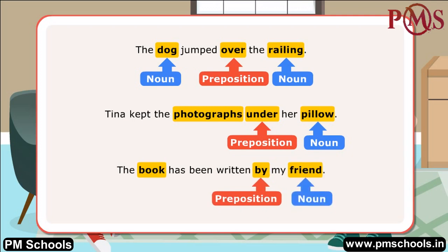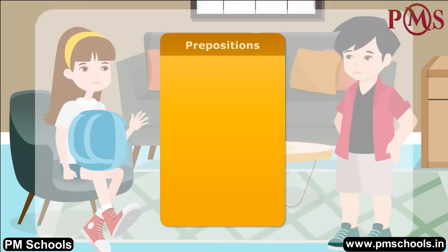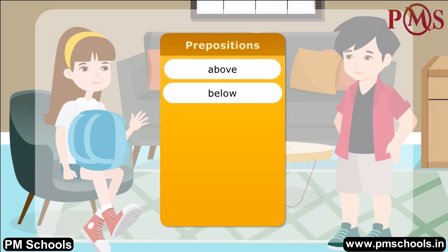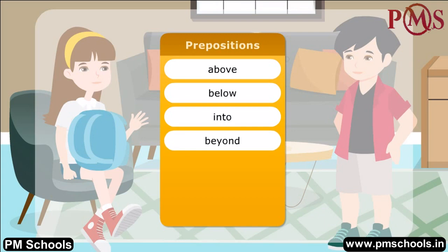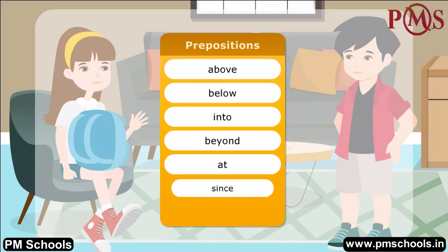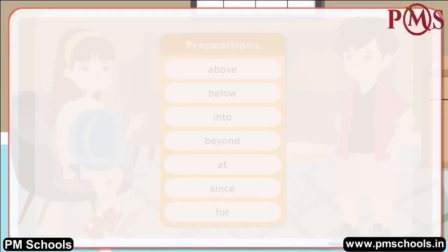Here is a list of some prepositions: above, below, into, beyond, at, since, for. Christine's cat was missing.